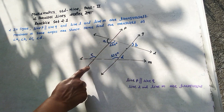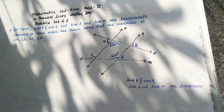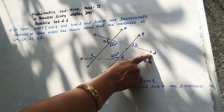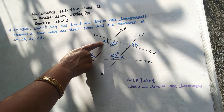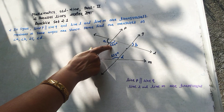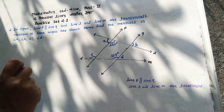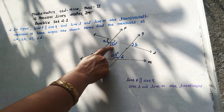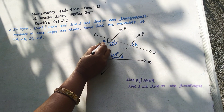Here, line P is parallel to line Q and line L and line M are transversals. Taking the first transversal, angle A and angle 110° are in a linear pair. Therefore, their sum equals 180°. So, angle A equals 180 minus 110, which means angle A is 70 degrees.